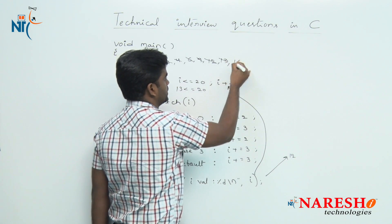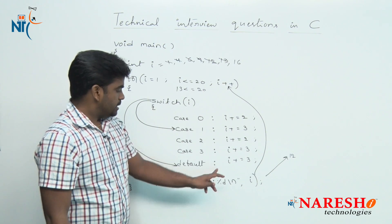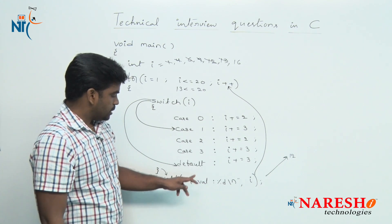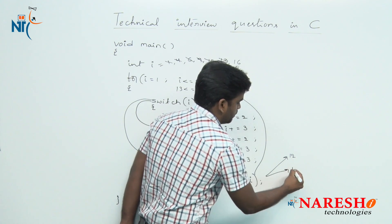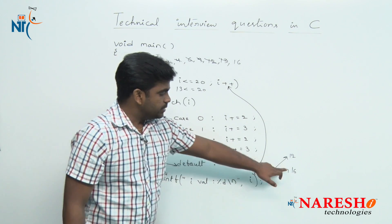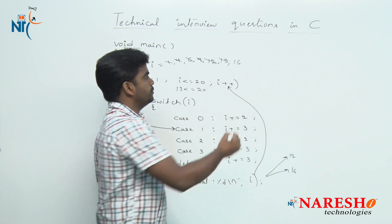Here the control comes out of that and it will print i value is 16. After printing the value 16, again it will go and increase the value. i value will modify, the value becomes 17.